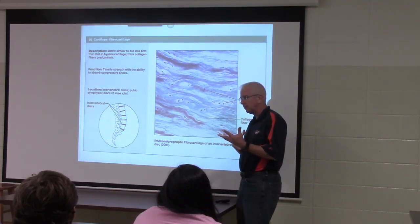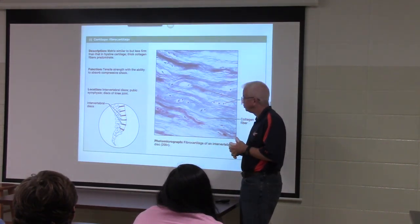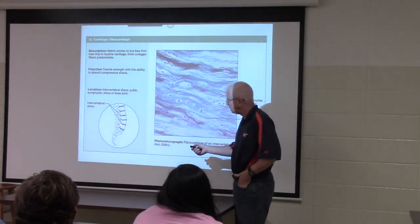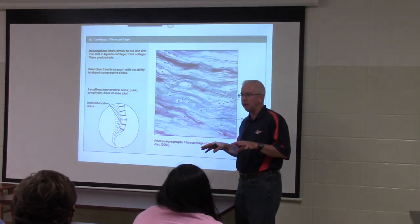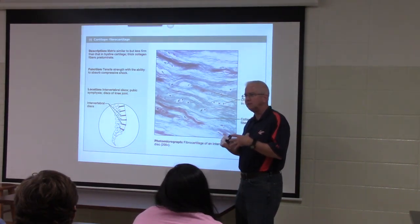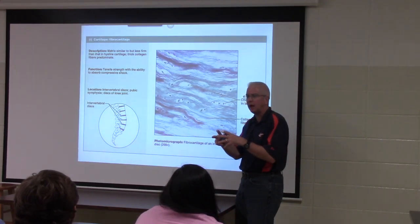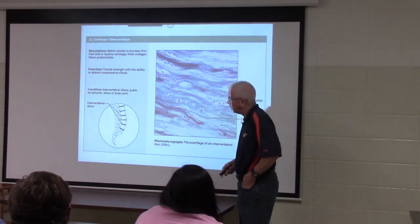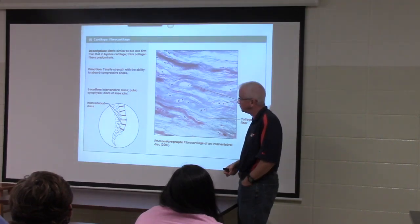In X-rays or MRIs of individuals with disc damage, pieces of the disc protrude. The annulus is damaged and the pulp is pushed out in one direction or another, causing pain due to sensory fibers in the surrounding area.